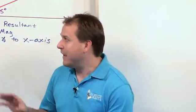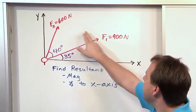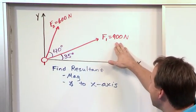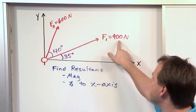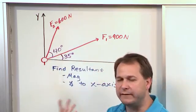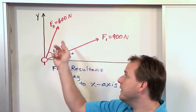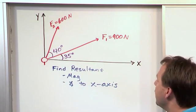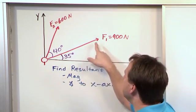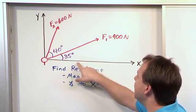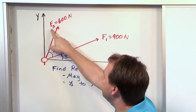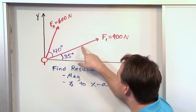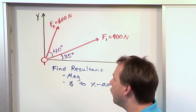What we have on the board is this problem here. We have F1 and F2. F1 is 900 newtons, F2 is 600 newtons. Notice the arrow for F1 is longer than this arrow, and that's because it's representing 900 newtons versus 600 newtons. We're also given a couple of angles. We know that the angle between F1 and the x-axis is 35 degrees, but we also know that the angle between F2 and F1, so this interior angle here, is 40 degrees.